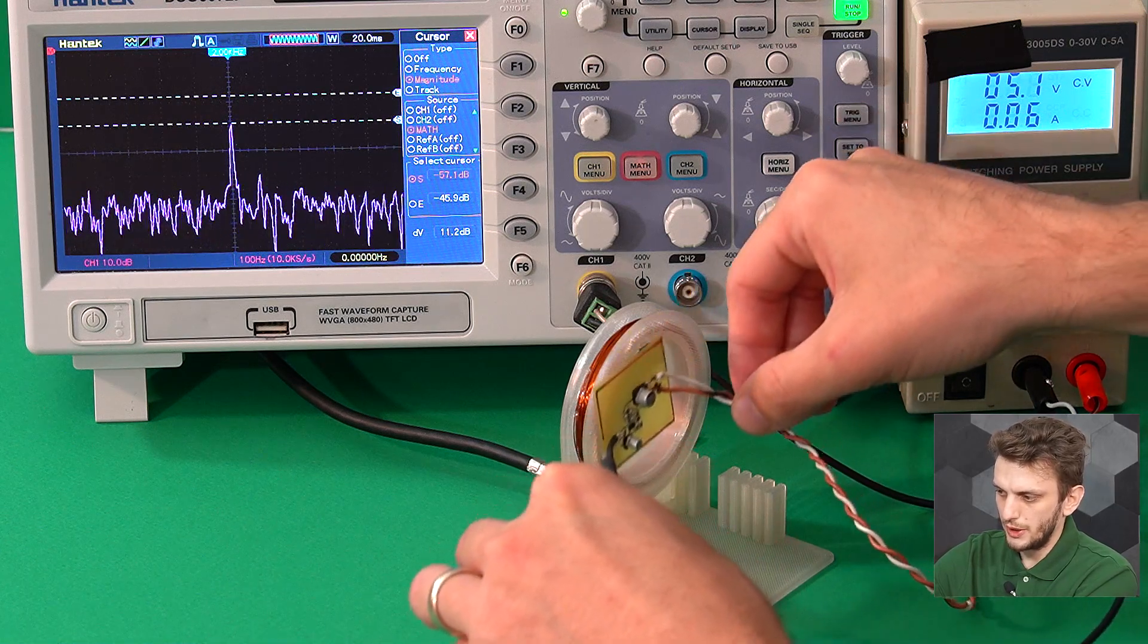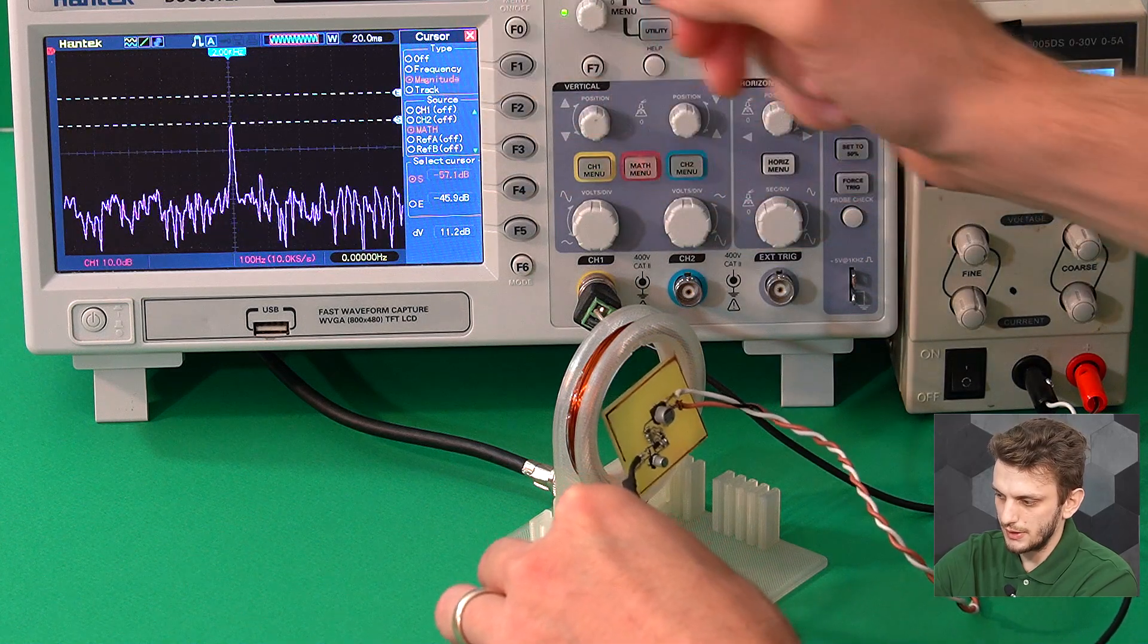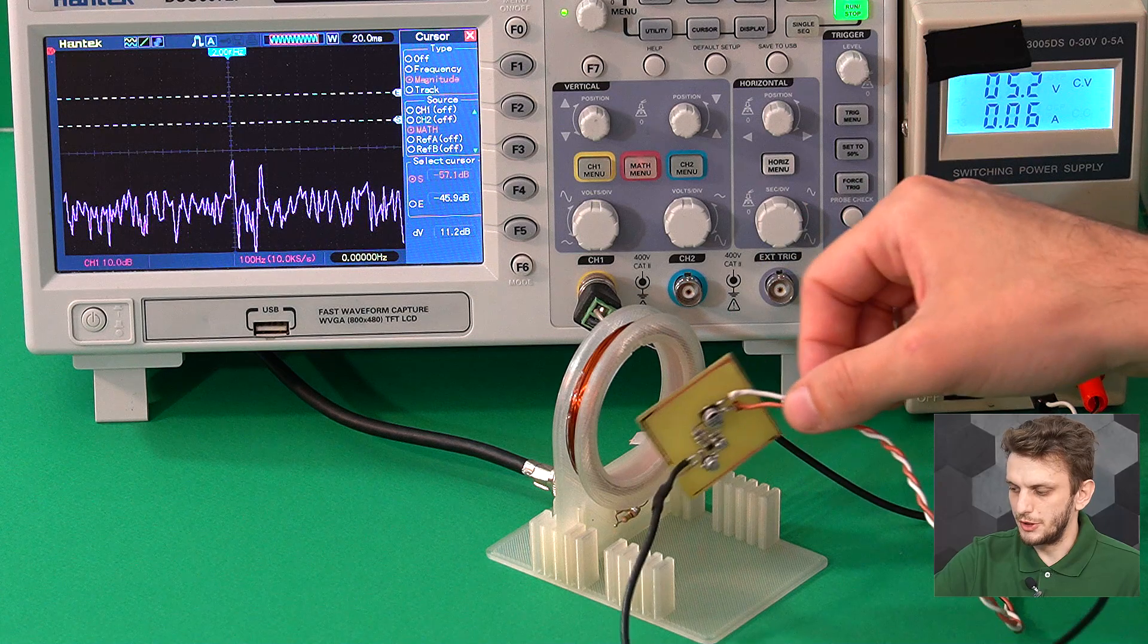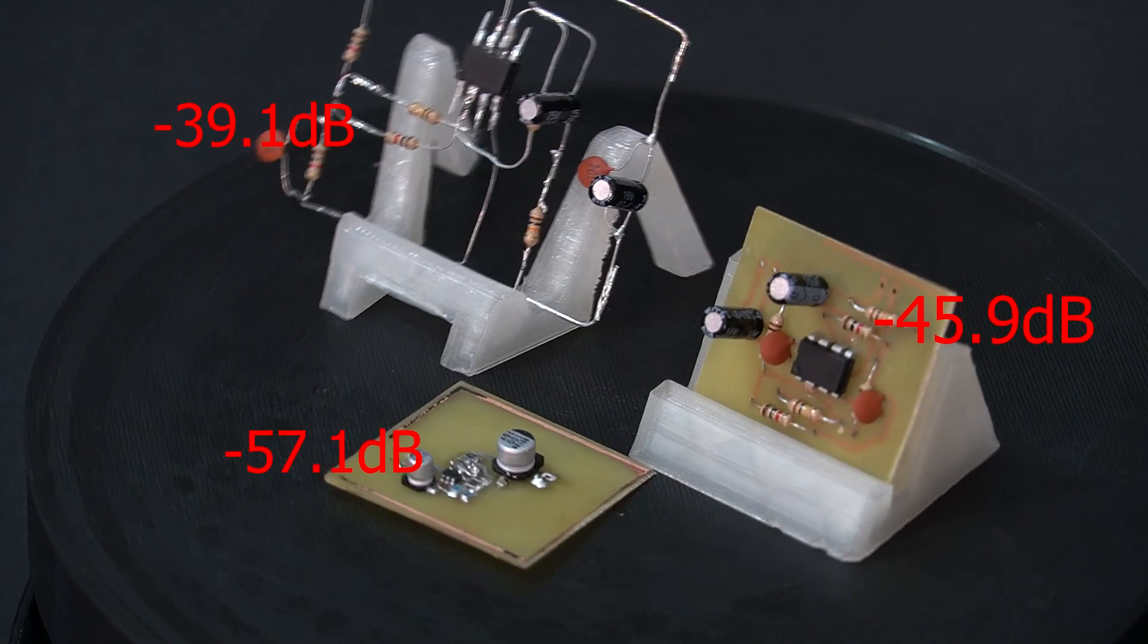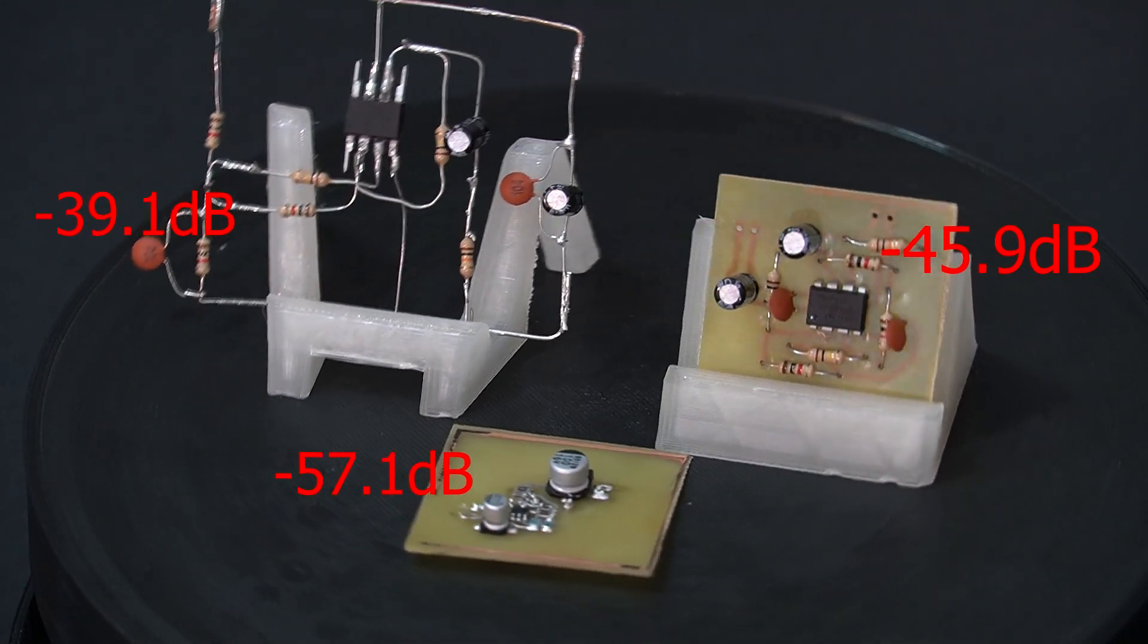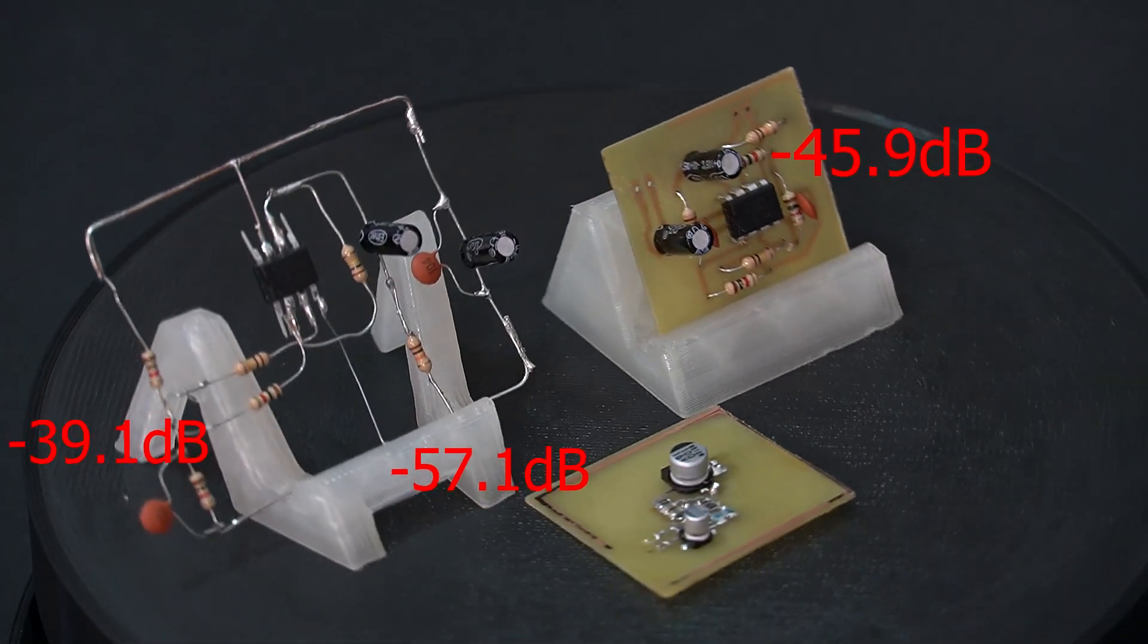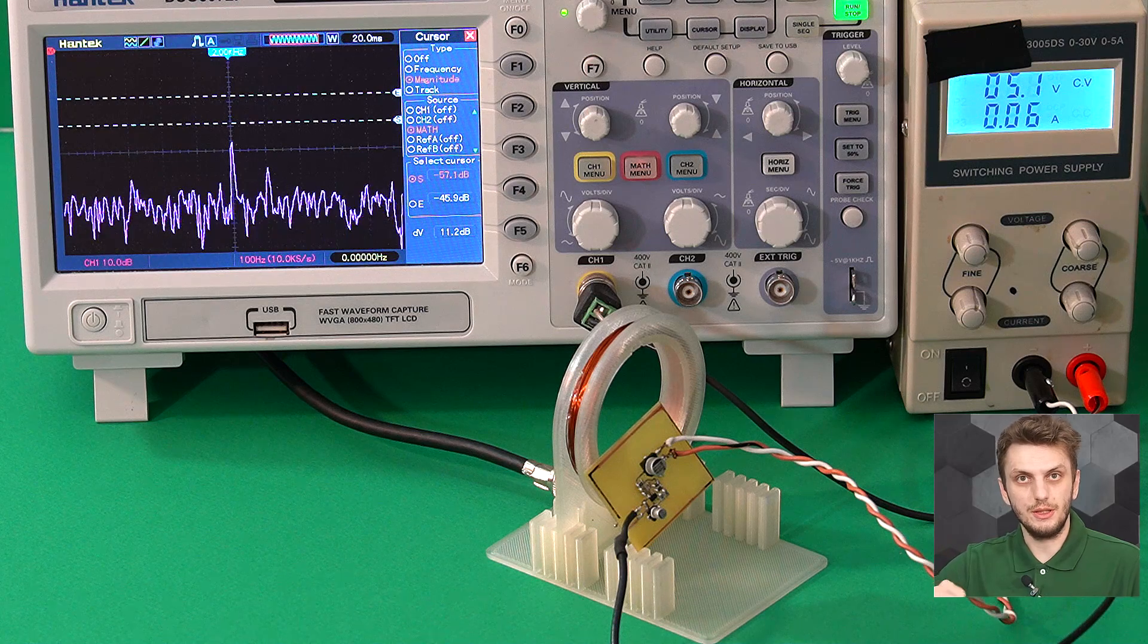So regardless of where it's placed around the inductor, we can't really get above this level. So if we compare this measurement to our very first measurement, the one with the components placed in the air, we're about 17 to 18 decibels lower. So the exact way in which the components are placed, how close they are together, has a clear impact on just how much noise you can induce into the circuit.